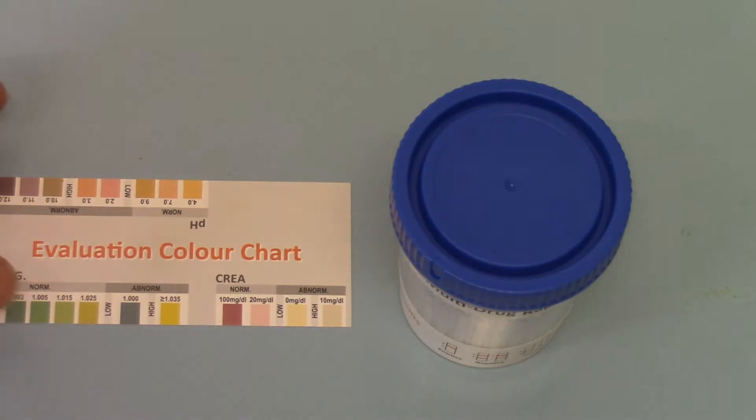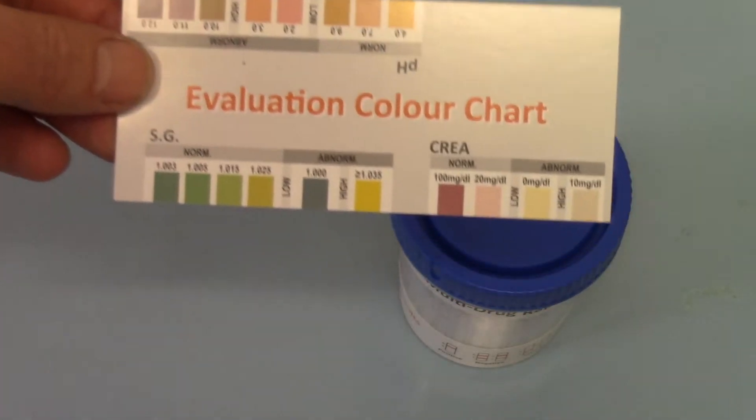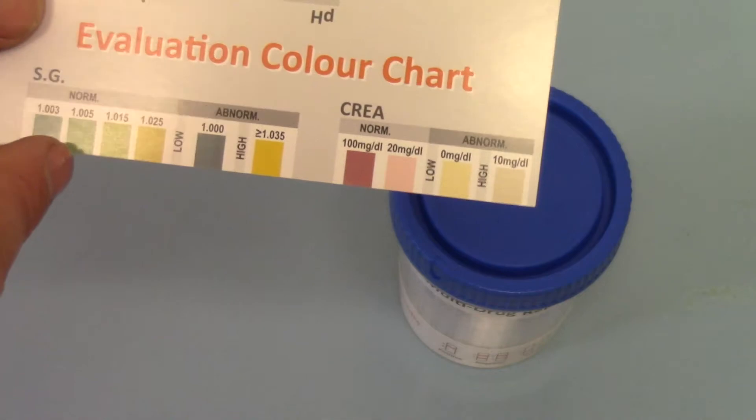With the cups you've been supplied with, you'll get one of these evaluation color chart cards. They have different readings for different parameters on here.